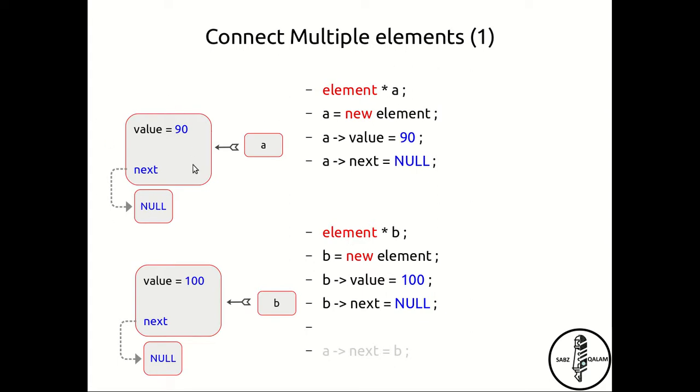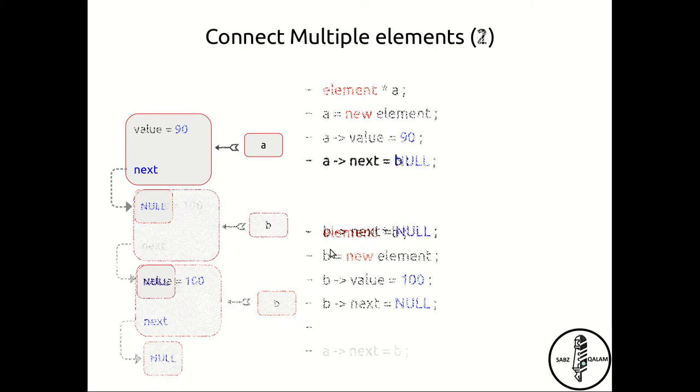A has been assigned as new element, which allocates within the memory location a size needed for our structure element. Then we've just initialized it. Right now, the next pointer has been assigned to null, so it's pointing to a zero location or null location. The same goes for b.